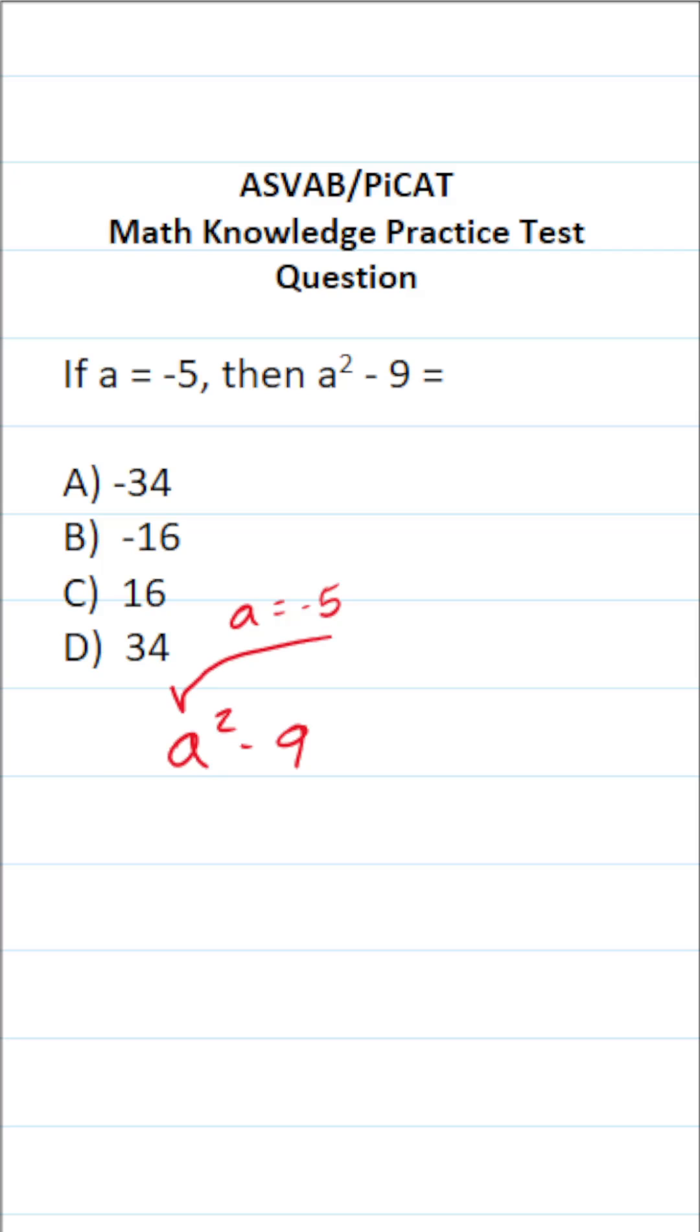In this case we're going to evaluate the expression when a equals negative 5. So let's go ahead and plug that in for a. This becomes negative 5 squared minus 9.